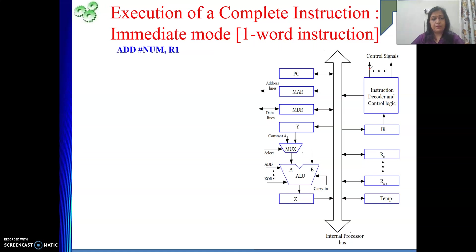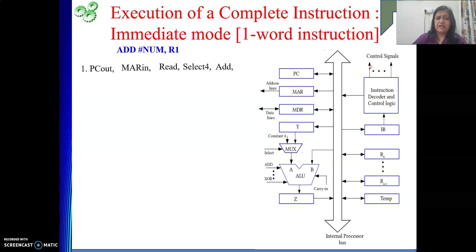The operation is: ADD #num, R1. This indicates the data represented by symbolic name 'num' will be added with register R1, and the result will be stored in R1. The journey is the same — we need to first fetch the instruction. This fetch part is already explained and similar to the previous explanation, so this part is done.